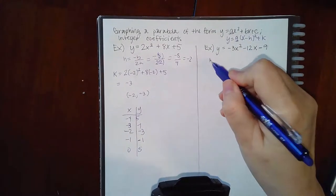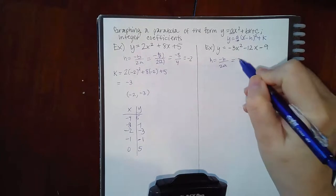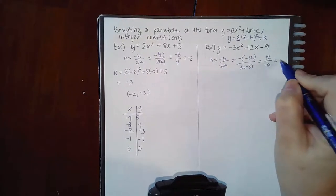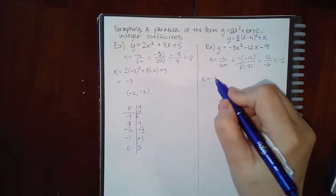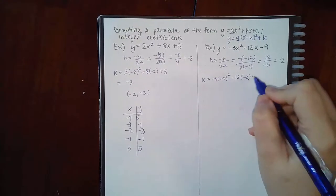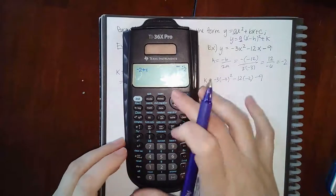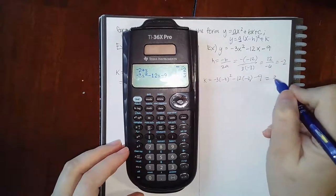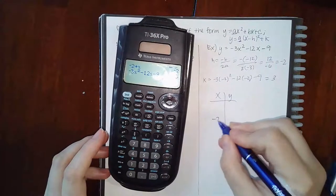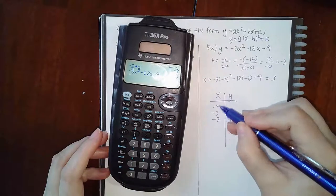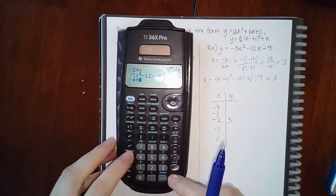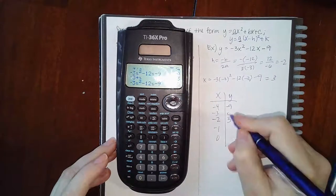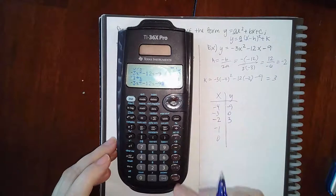For the next example with a = -3 and b = -12, h = -(-12)/(2·(-3)) = 12/(-6) = -2. For k, store -2 as x, then compute -3x² - 12x - 9 to get positive 3. Make a chart with -2 and 3 in the middle, pick two values less than -2 and two greater, and use the calculator's programming feature to find each y-value quickly.